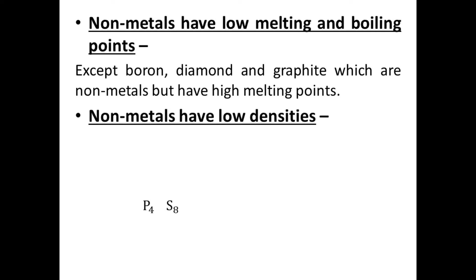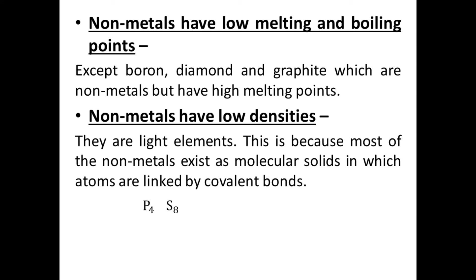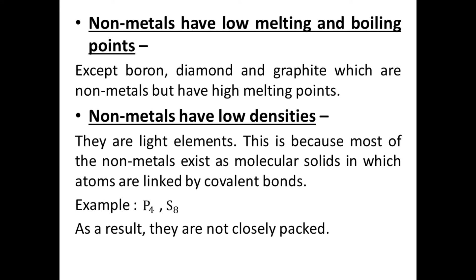Non-metals have low density — they are light elements. This is because most non-metals exist as molecular solids in which atoms are linked by covalent bonds. For example, phosphorus exists in the form of P4, and sulfur exists in the form of S8, meaning eight atoms of sulfur are linked by covalent bonds. As a result, they are not closely packed, so they have low density.